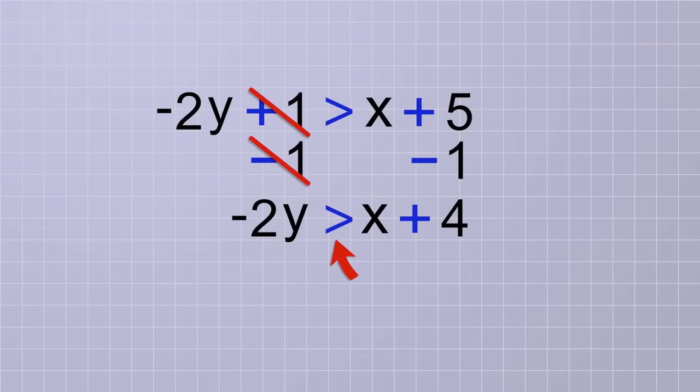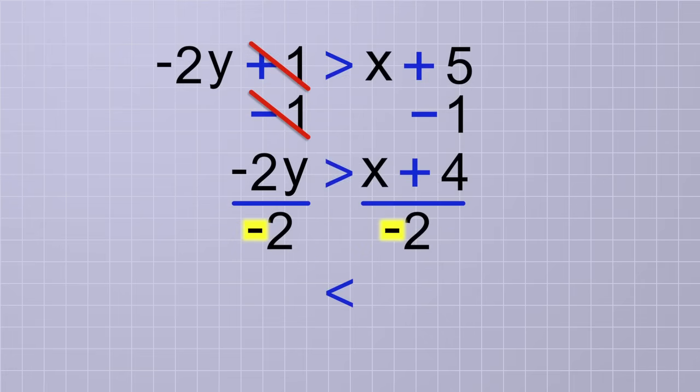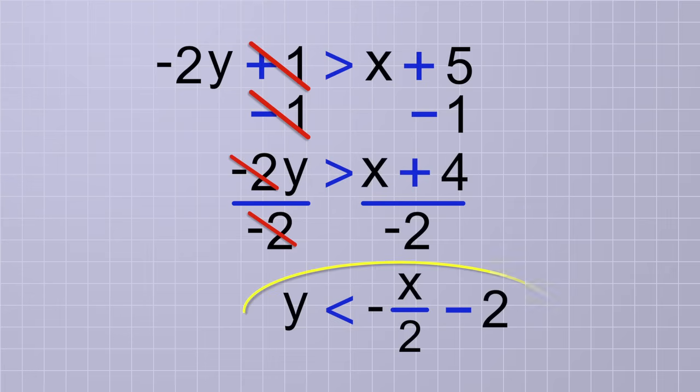But now, we need to get rid of the negative 2 that's being multiplied by y. That can be done by dividing both sides by negative 2. Because that will change the sign of both sides, we do need to flip the inequality sign for this operation. It was the greater than sign originally, but now it will become the less than sign. On the left, the negative 2 over negative 2 cancel, leaving positive y all by itself. And on the right, we divide the entire x plus 4 term by negative 2, which simplifies to negative x over 2 minus 2. So the final result is y is less than negative x over 2 minus 2.